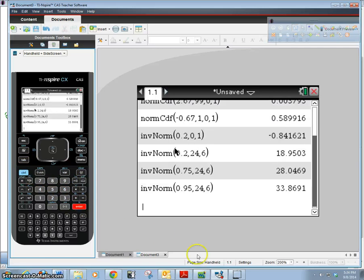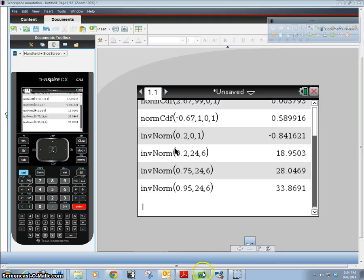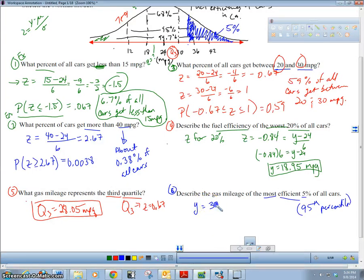33.87 miles per gallon. Now I probably should say this in full sentences. The most efficient five percent of all cars will have a fuel efficiency of 33.87 miles per gallon. That would be what I want to say.